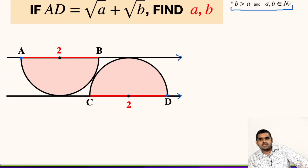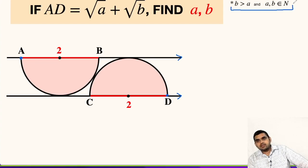Since A and B belong to the set of natural numbers, the constraint is that A and B cannot be zero, because zero does not belong to the set of natural numbers. They cannot be negative, and they cannot be decimals. So the minimum value of A or B can be 1, then 2, 3, 4, and so on.